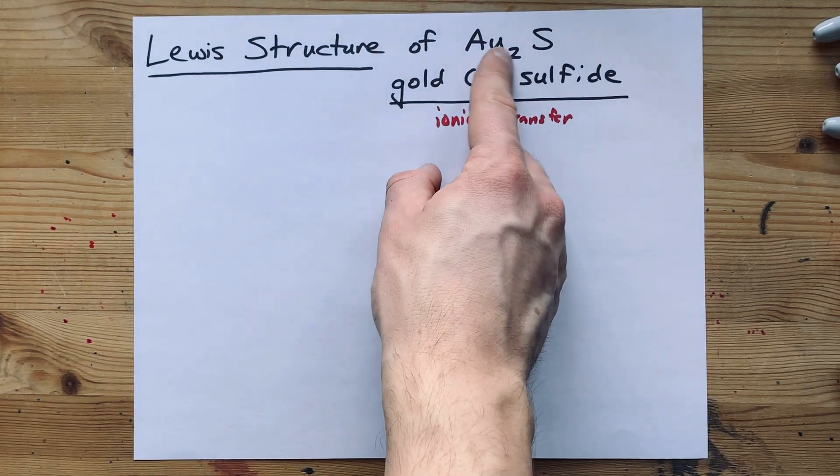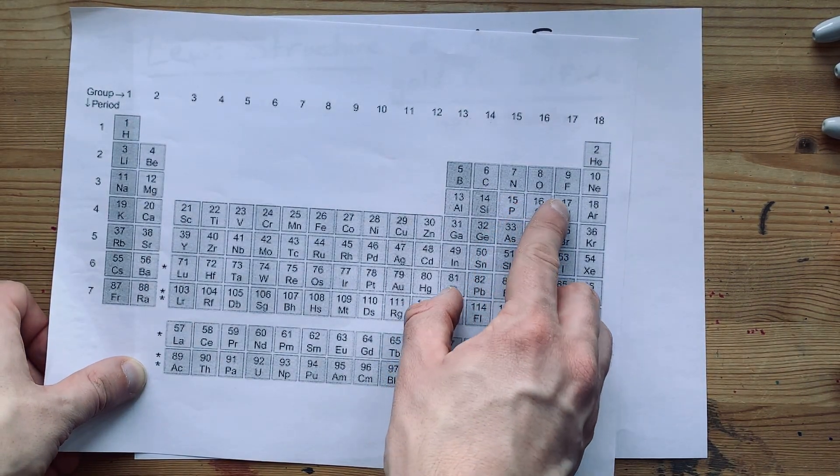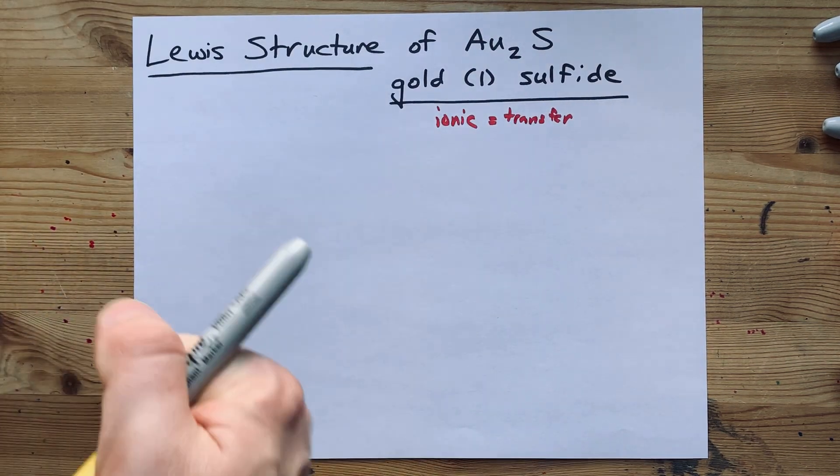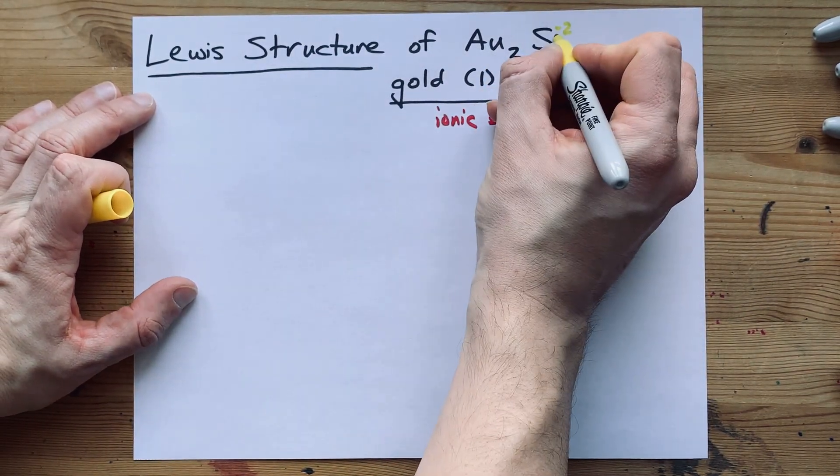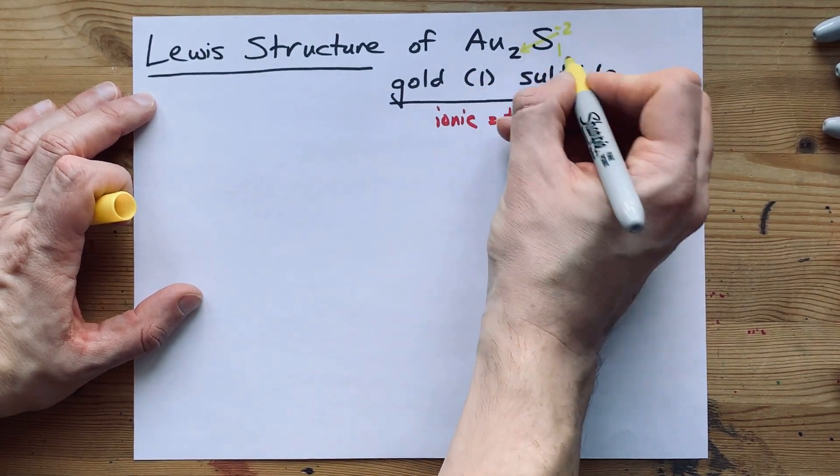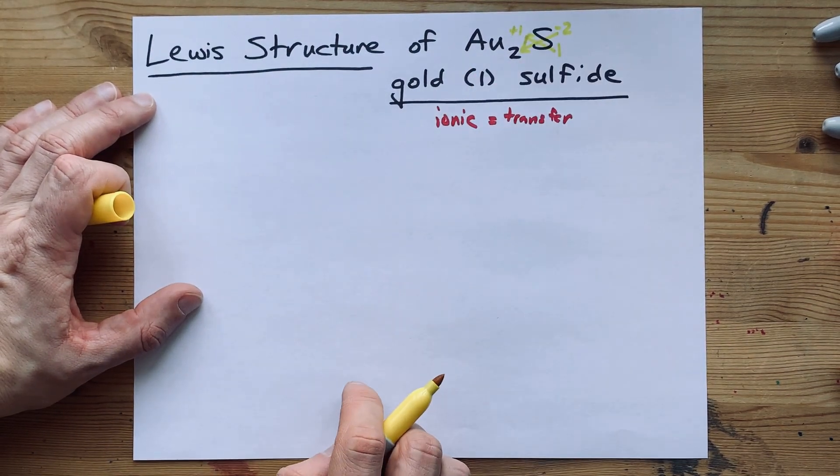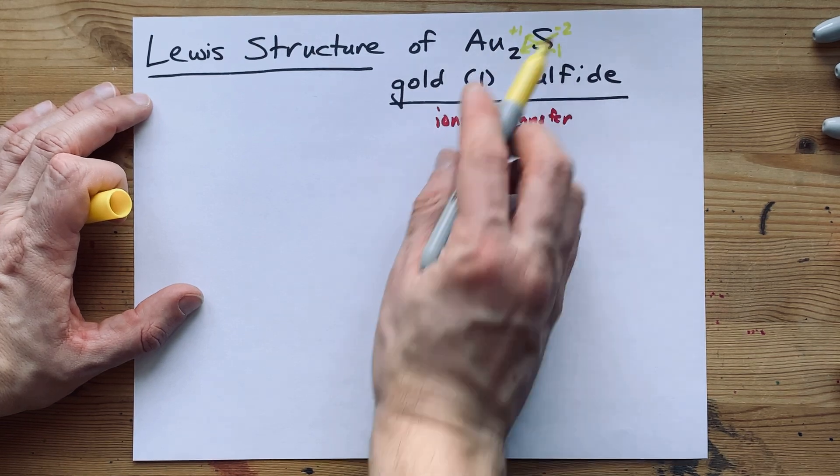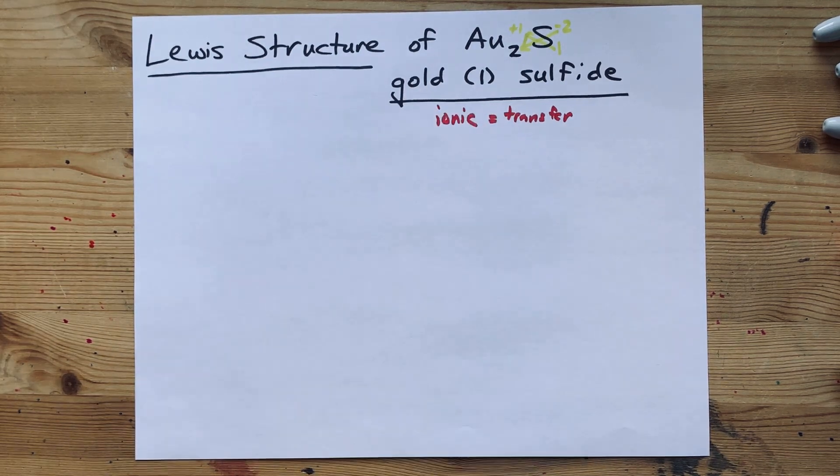But if you were given the formula, you'd have to know that sulfur is two electrons short of being a noble gas, and therefore, it likes having a charge of minus two. In fact, when you crisscross the charges, that two here came from that charge, and so the charge on gold had to have been positive one. That way, you need two of them to cancel with the minus two charge of sulfur. So, let's agree that the charge on gold here is one.